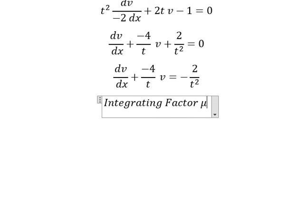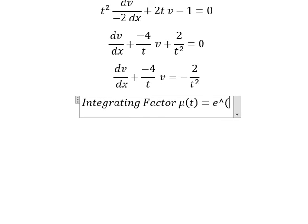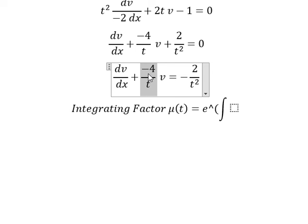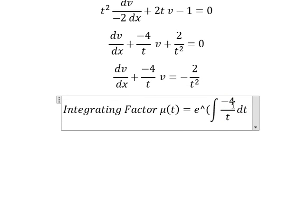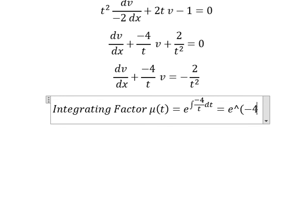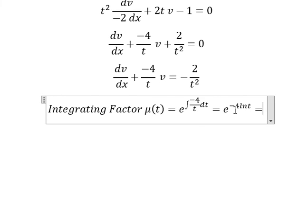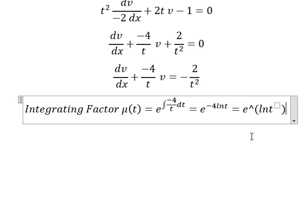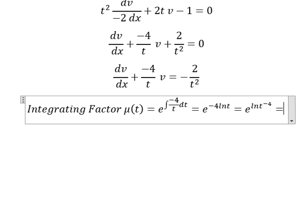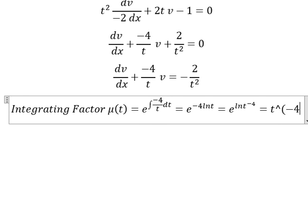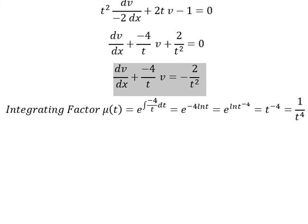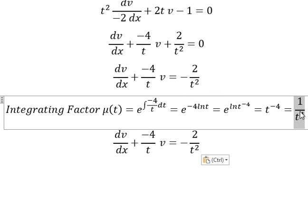So we can use μ(t) equals e to the power of the integral. We see that the coefficient next to v is negative 4 over t. So I will put this, and now we put negative 4 inside the natural log. This gives us t to the power of negative 4, or 1 over t to the power of 4. That means we multiply both sides by this.